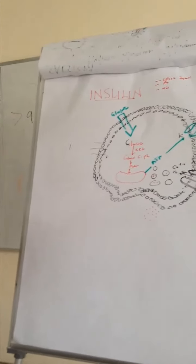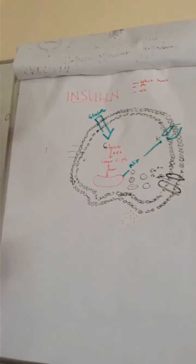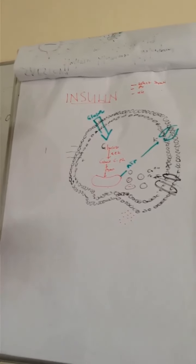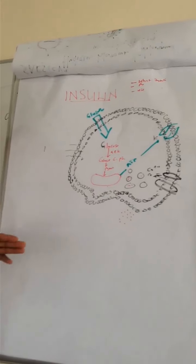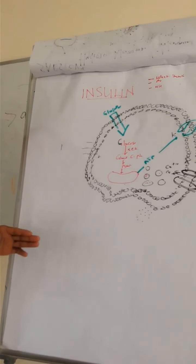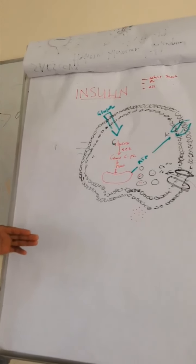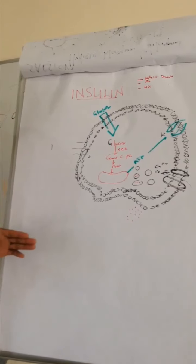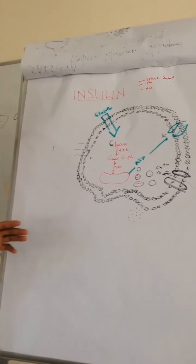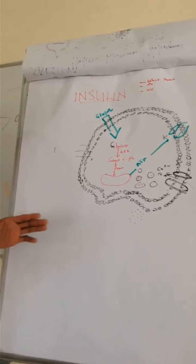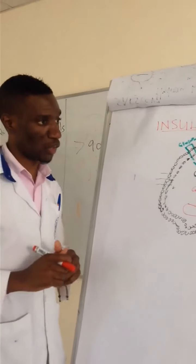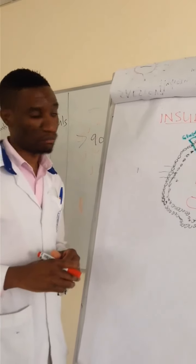The first thing I want to mention is that insulin is basically a peptide hormone — it's a hormone in the body. It is actually secreted by the endocrine part of the pancreas. So the endocrine part is what secretes the insulin.